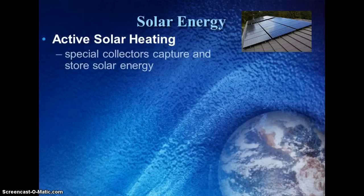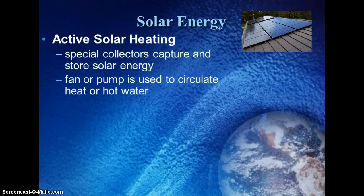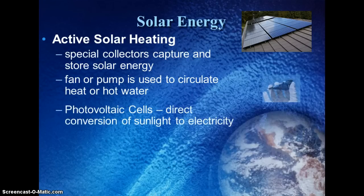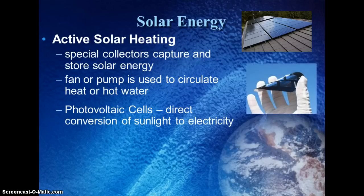With active solar heating, you have to have a certain type of collector that stores the solar energy and converts it into electricity, so you're not using the sun's heat directly. You would use some type of fan or pump that uses the electricity generated, and it circulates the heat through the house or the hot water.